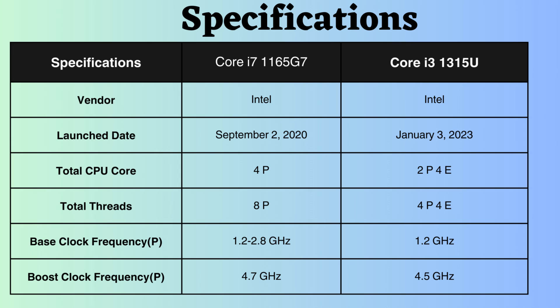The Core i7-1165G7 was released two years before the Core i3-1315U. While the Core i7-1165G7 features four performance cores, the Core i3-1315U has two performance cores and four efficiency cores. The Core i7-1165G7 has eight performance threads, whereas the Core i3-1315U has four performance threads and four efficiency threads. Having more performance cores and threads helps the Core i7-1165G7 handle more tasks simultaneously and effectively.